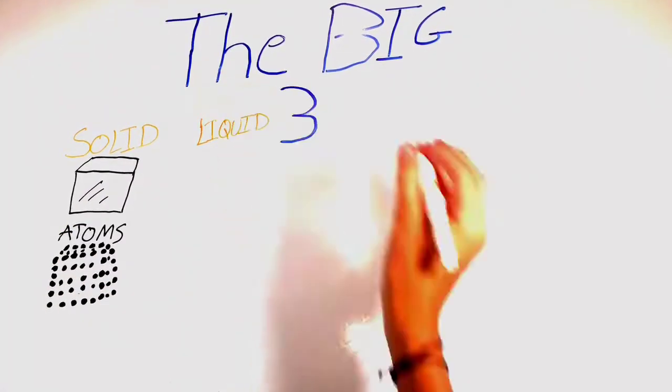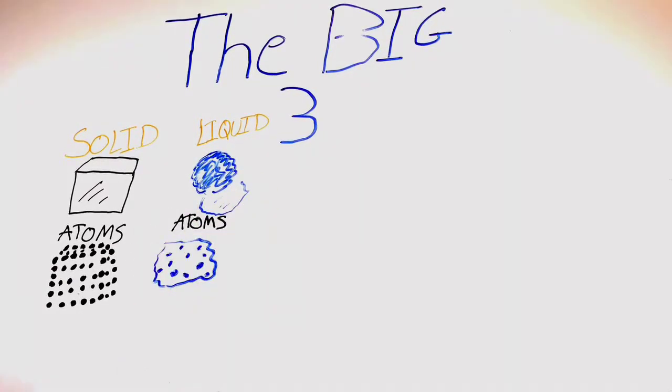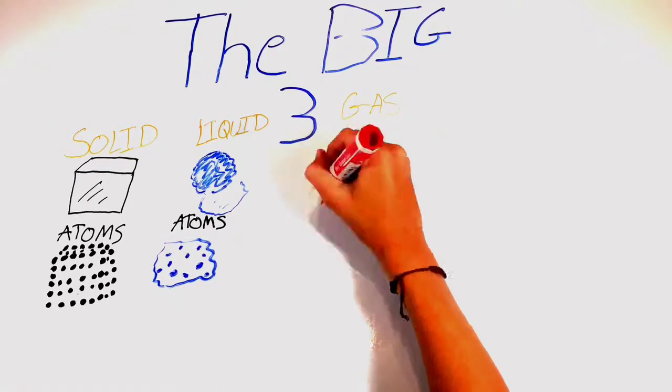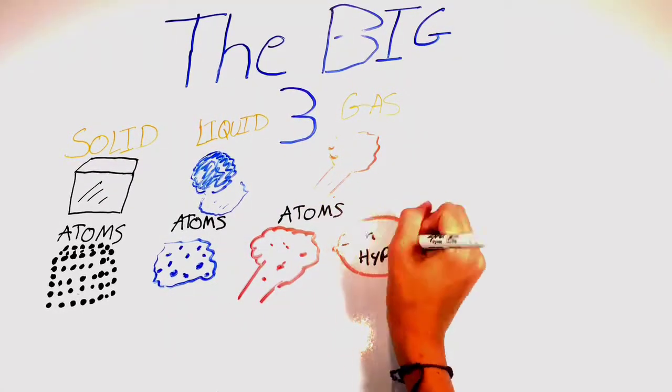When the ice melts, it turns into a liquid, and the liquid takes the shape of any container that it's put in. When the water evaporates, it goes into a gas state. The atoms in a gas state move around aimlessly and quickly. A gas will also fill up any container or space that it is put in.